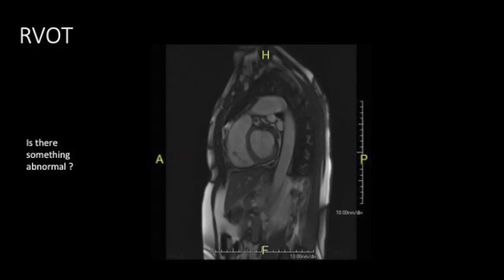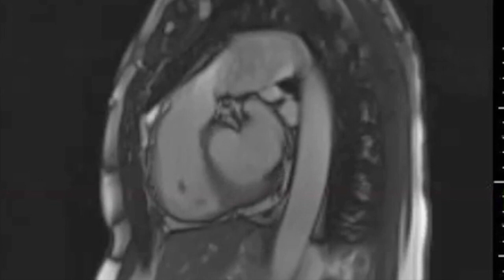And the second view that I am introducing is the right ventricular outflow tract view. We can see the pulmonary artery arising from the right ventricle. Now there is something abnormal that is going on with this patient. Look at it and I will tell you about it in my next session. Thank you.